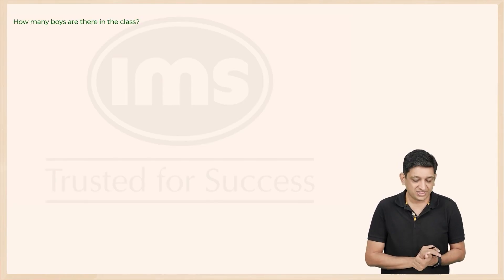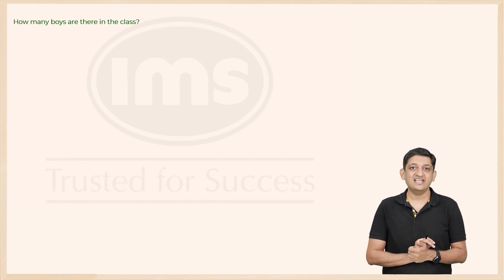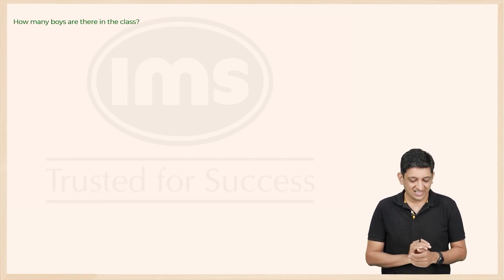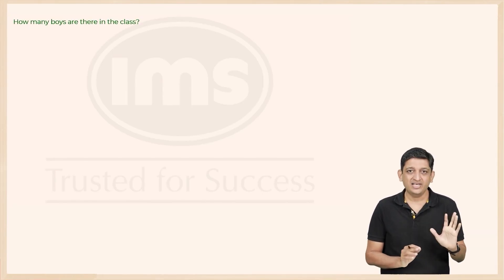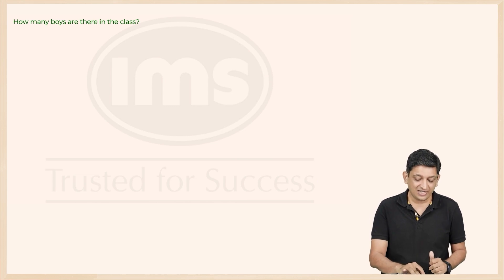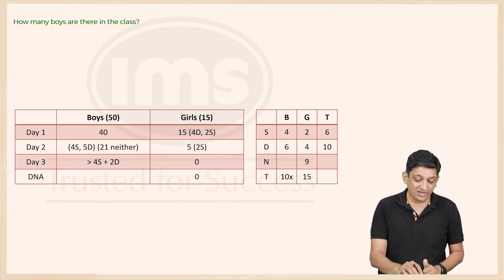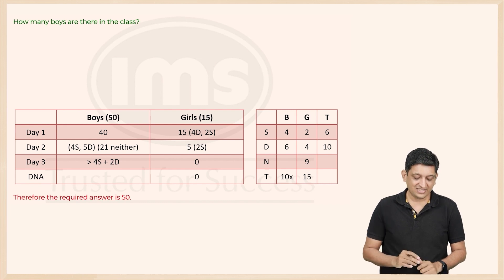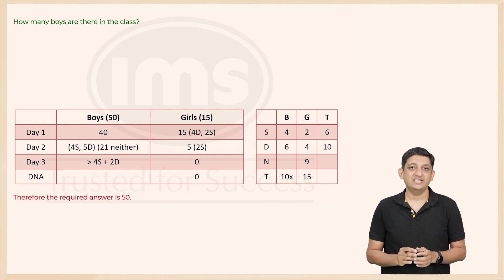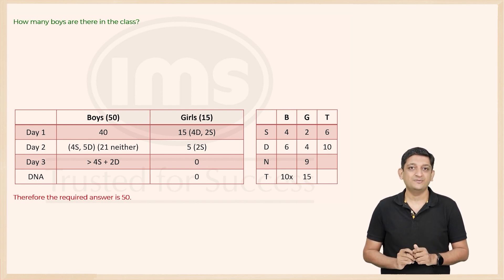Question 1: How many boys are there in the class? Even if you were only attentive for the first 5 minutes of solving this set, you would be able to answer this. The number of boys is 50. So the correct answer is 50.